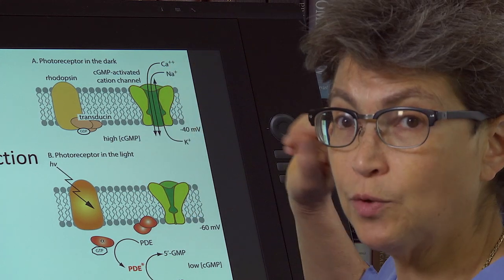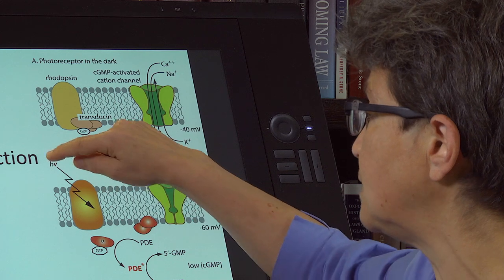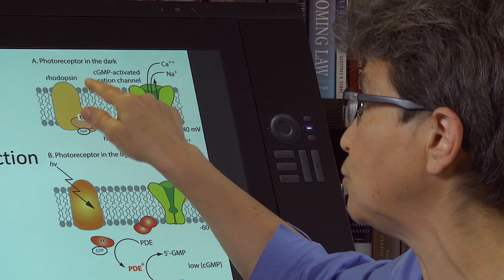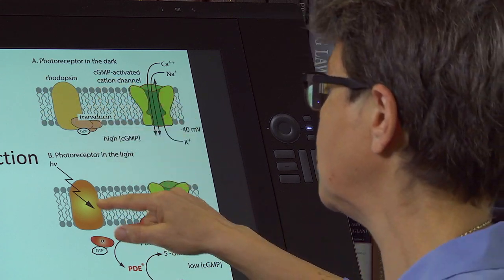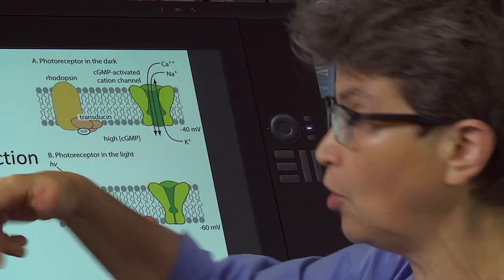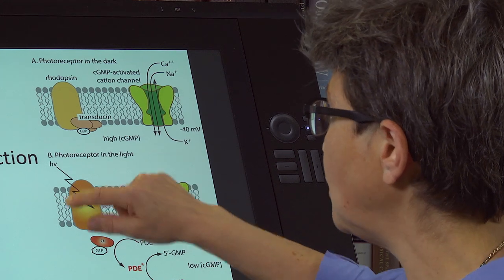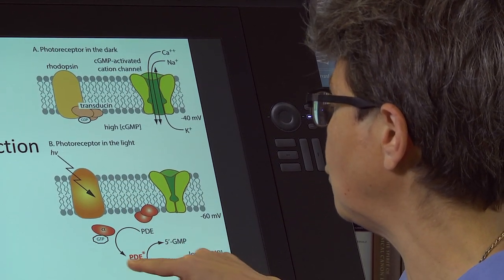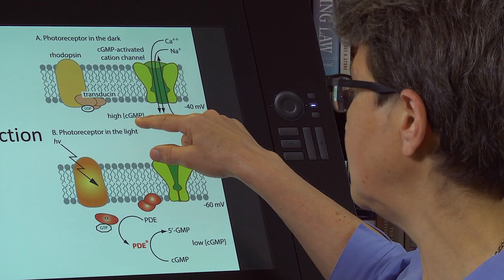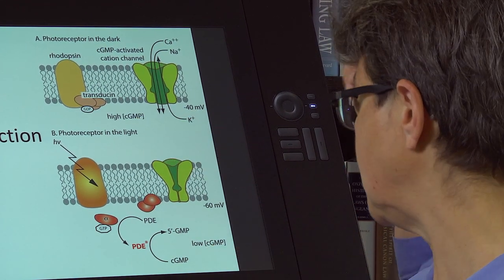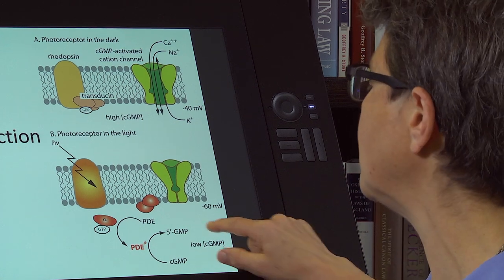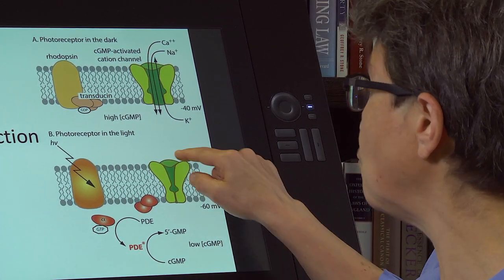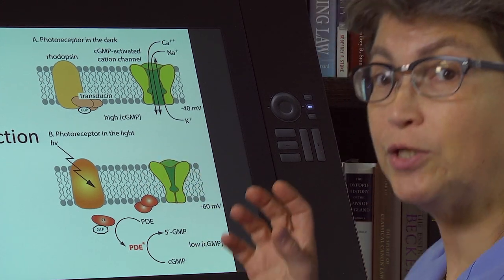When there's light, light activates this metabotropic receptor called rhodopsin. There is a chromophore in here, the retinol, and the activation of rhodopsin activates a phosphodiesterase, which then metabolizes the cyclic GMP. Now there is low cyclic GMP inside the cell, and so these channels are going to close.